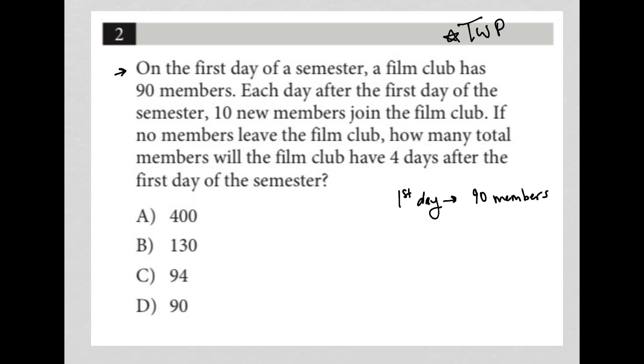The next sentence says, each day after the first day of the semester, 10 new members join the film club. So that means like second day, there should be 100 members, right? Because we're adding 10. Then third day, and you get the gist, right? Each day we should add another 10 members, so 110 members, so on and so forth.